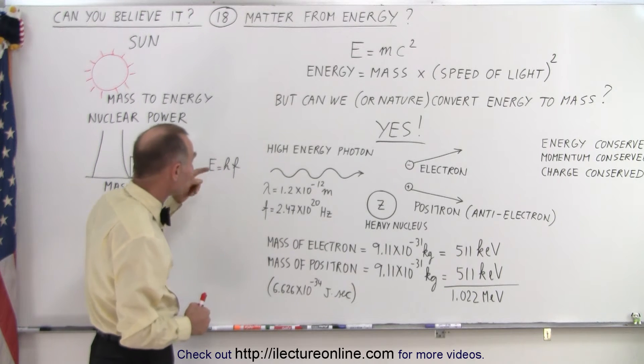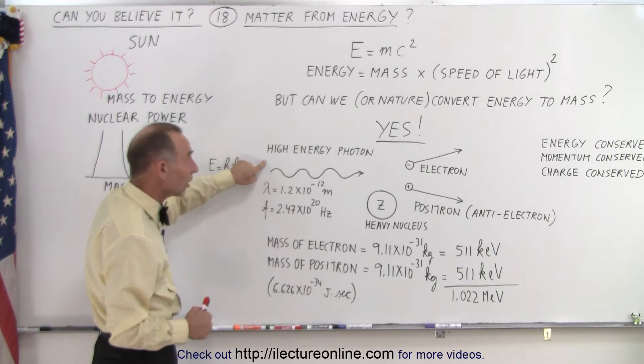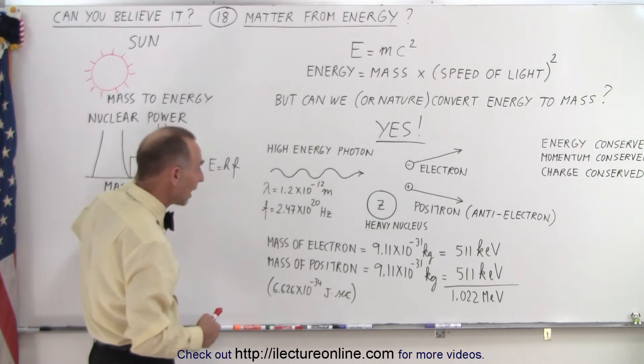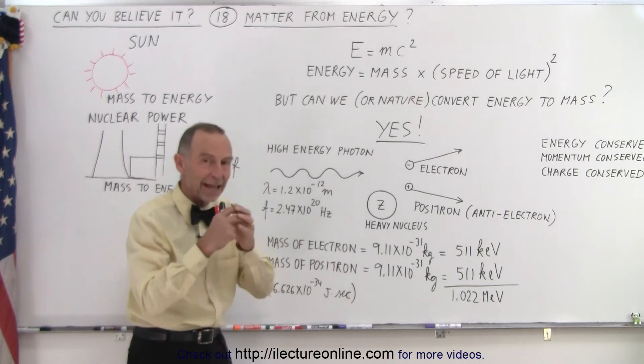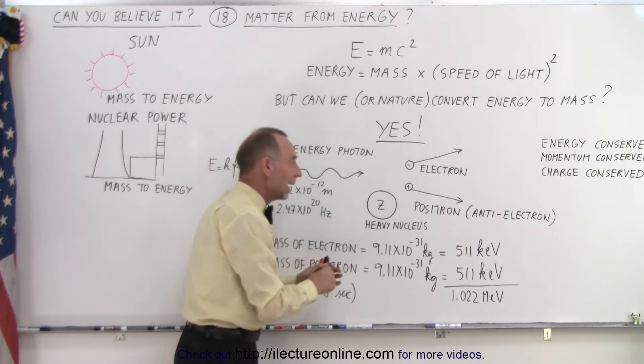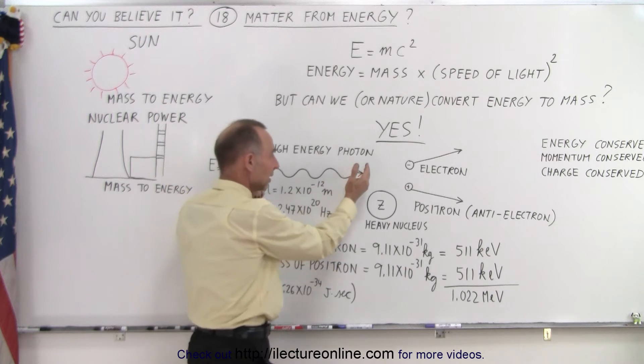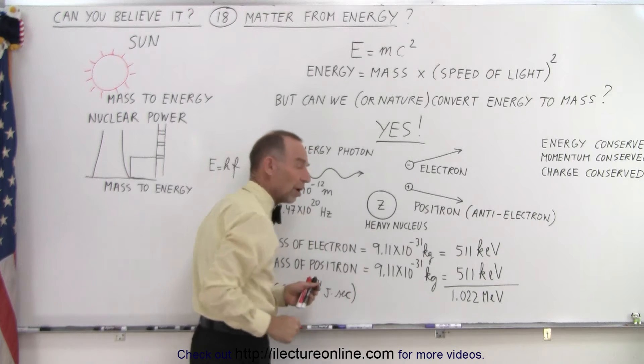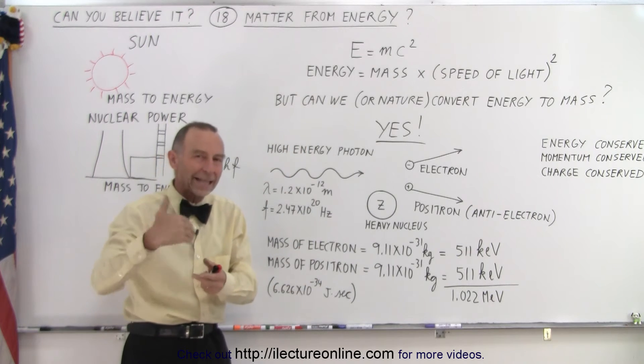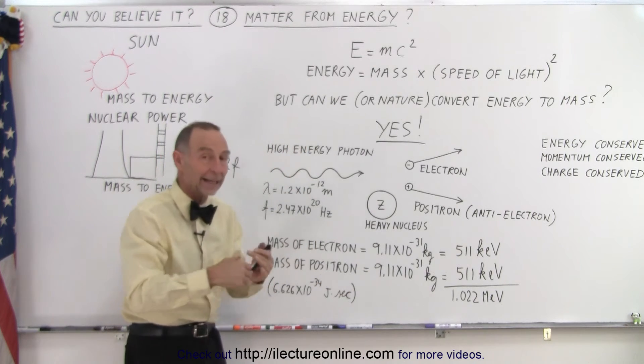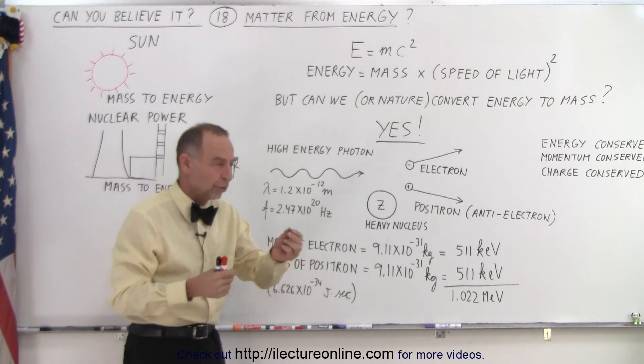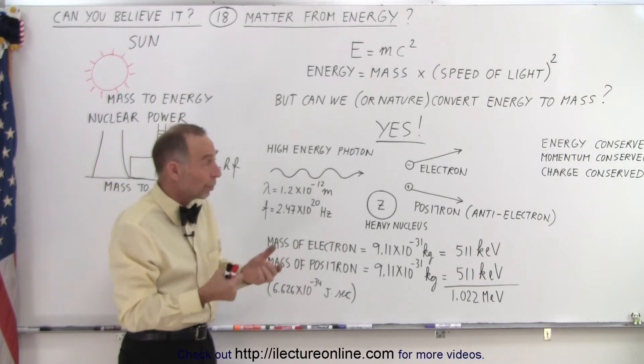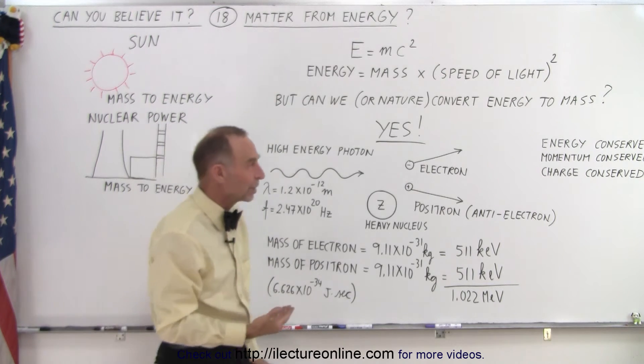For example, we've taken some very high-energy photons, typically in the gamma radiation range, and had it go by very heavy nuclei, and caused that energy, that photon, to be converted into two particles, an electron and a positron. A positron is what we call the antiparticle of the electron, or the antielectron, and it turns out whenever a particle is produced, the opposite, or the antiparticle, must be produced as well.